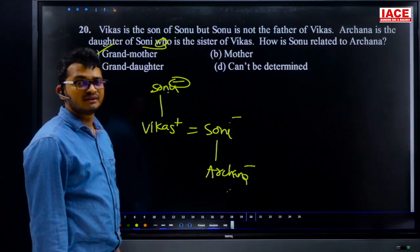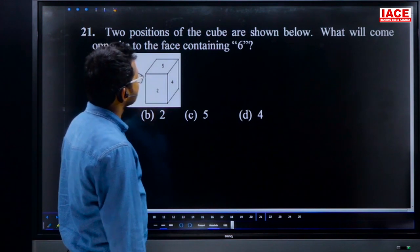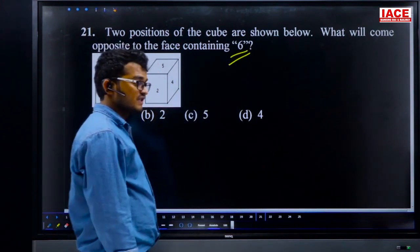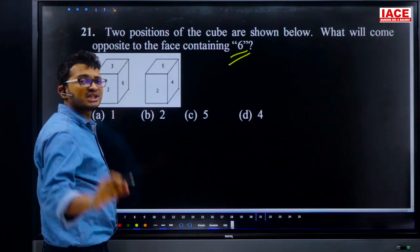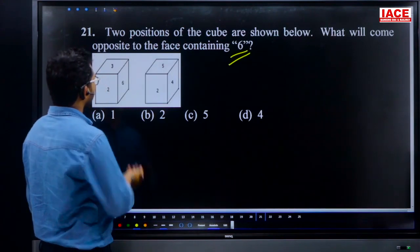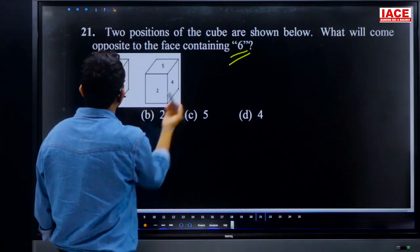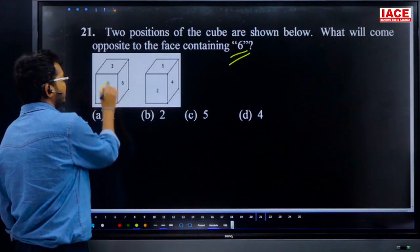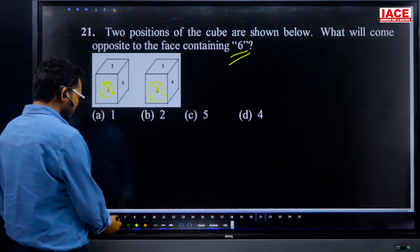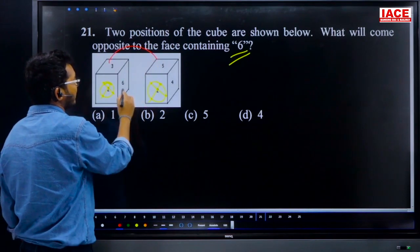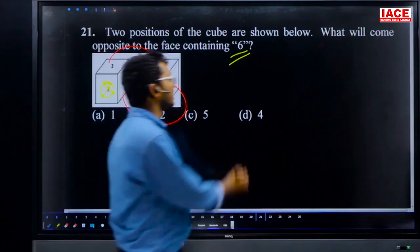Question 21: two positions of a cube are shown; find what is opposite the face containing 6. Basic dice rule: if one face is opposite another, those two faces are not adjacent. From the two views — one shows 2, 3, 6; the other shows 2, 5, 4. Since 2 is common on the same face, using the rule: 6 is opposite 4. Answer is option D.